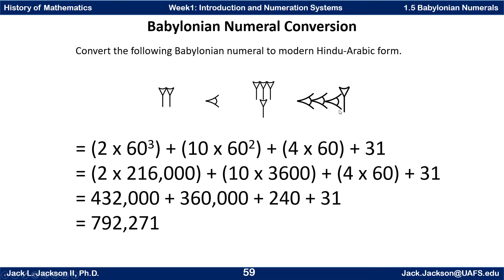Starting on the right, these are just units — there are 31 of those, or 31 times 60 to the 0th power, which is just 31 items. The next digit is the symbol for 4 in English, but it's in the second place, so that's 4 groups of 60. 4 times 60 is 240.